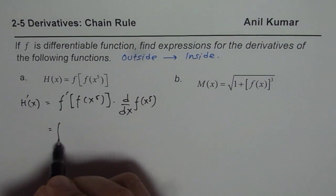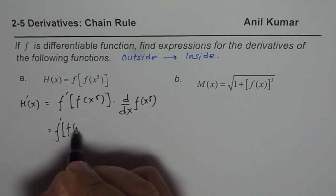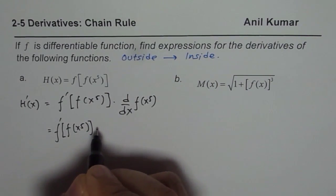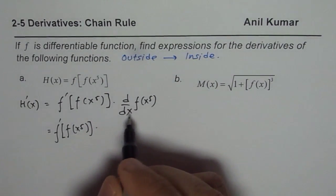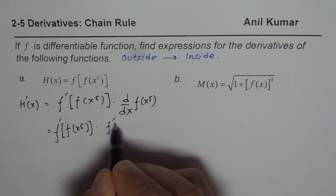This gives us f'(f(x^5)) times the derivative of this function, which is the derivative of x^5.